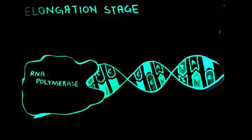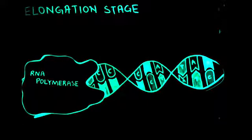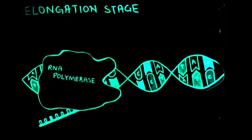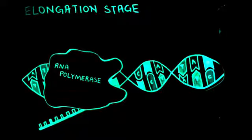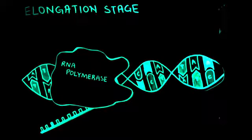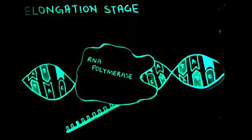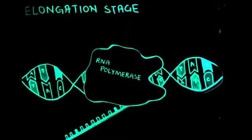During the elongation stage, the RNA polymerase moves along the length of the template DNA strand and uses it as a template to create a single strand of mRNA. As it moves along, it undoes the unwinding and closes the DNA, keeping only 10 to 20 base pairs exposed at a time.